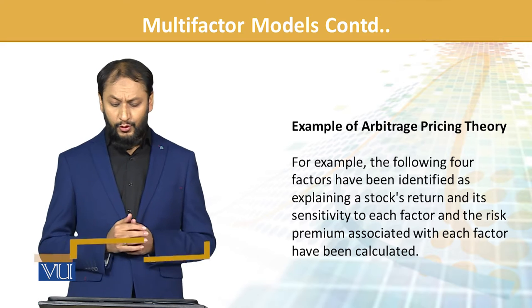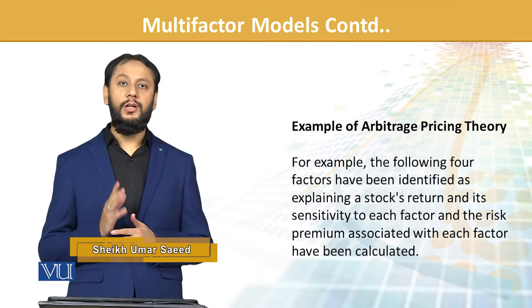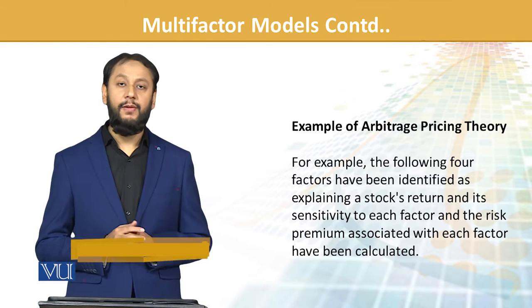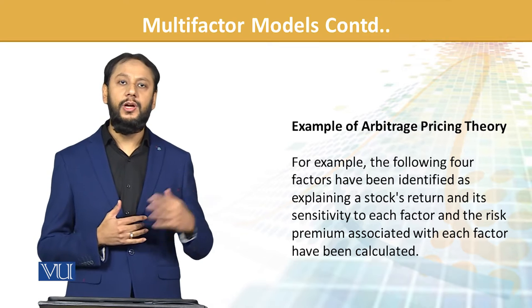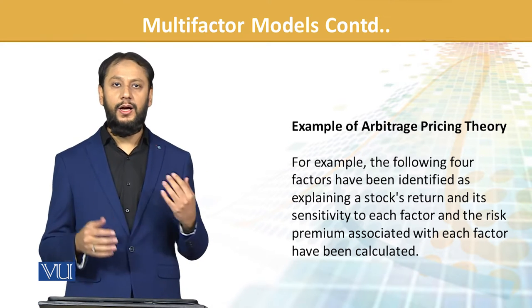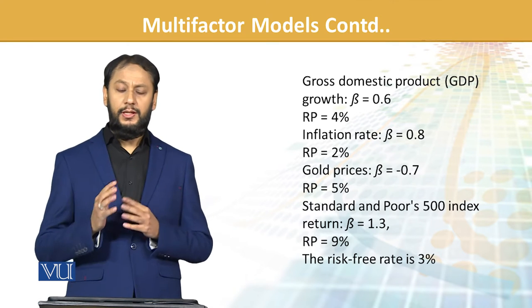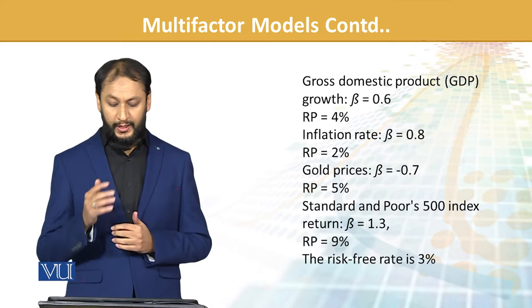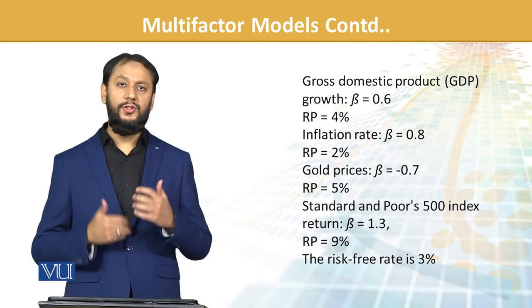The following four factors have been identified as explaining stock returns, and the sensitivity to each factor and the risk premium associated with each factor have been calculated. Humne apne stock ko link dekha hai ke yeh 4 factors hain inke saath iski linkages hain aur humne iski sensitivity bhi dekhi hai. The four factors are: GDP, inflation rate, gold price, aur S&P index ka return.